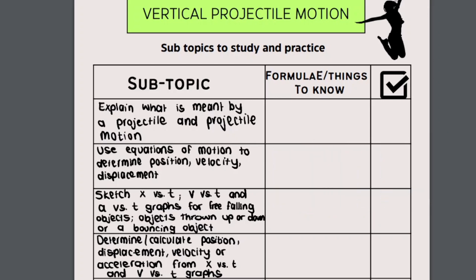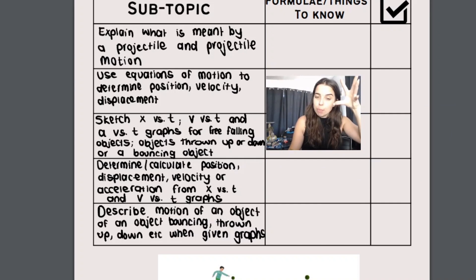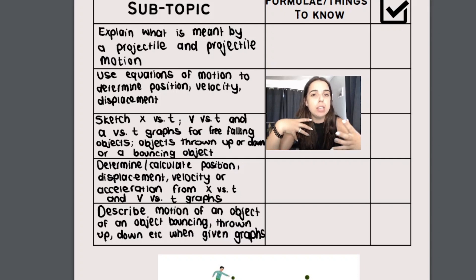You can see over here things that you need to know. For example, what do we mean by projectile or projectile motion. You need to be able to use equations of motion to calculate position, velocity, displacement, time, acceleration, all those things. You need to be able to sketch graphs, displacement or position versus time, velocity versus time, acceleration versus time. You need to be able to do that for an object falling straight down, if I drop an object off a building, if I throw an object upwards and then it comes down, if an object bounces. You also need to be able to use graphs to calculate things such as displacement or velocity and be able to look at a graph and describe the motion of an object. This is a cool section because it is very similar to what you did in grade 10 but it has a few more concepts and it's about vertical motion.